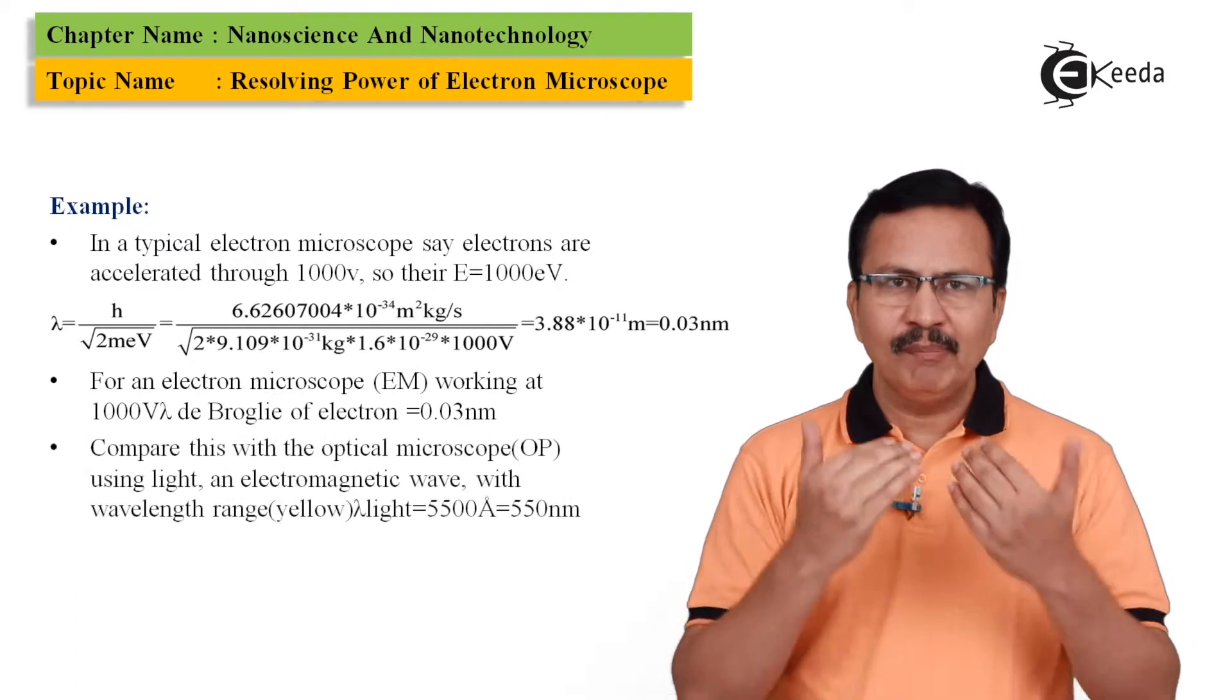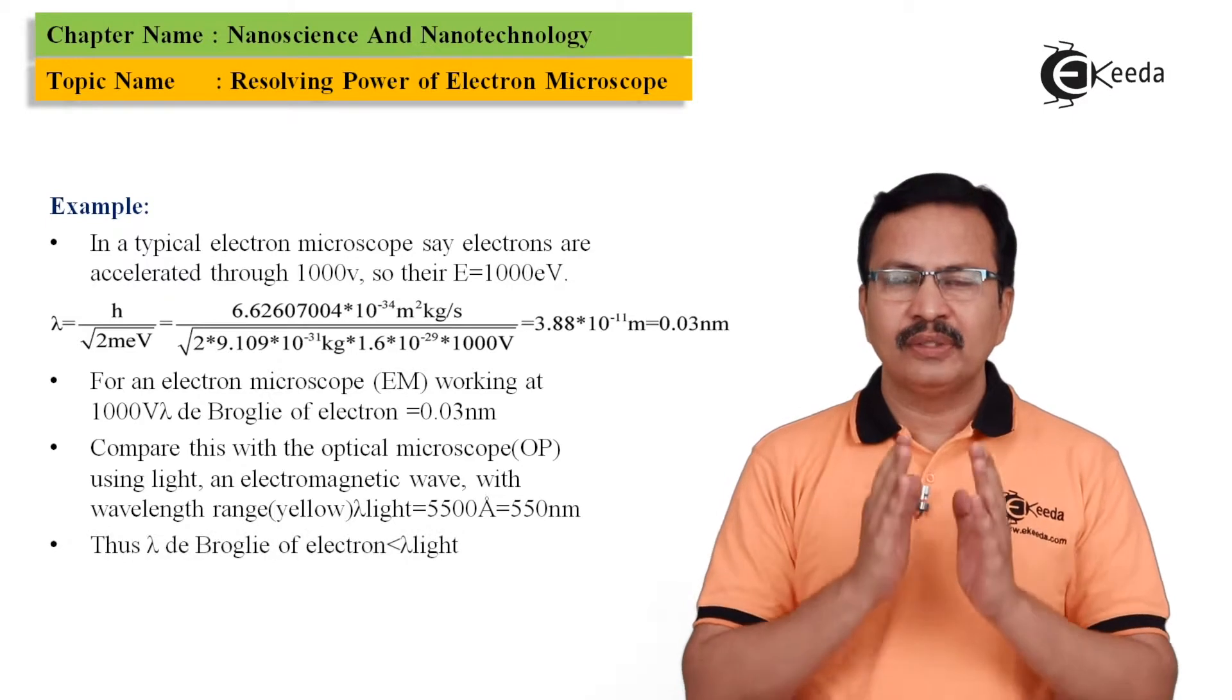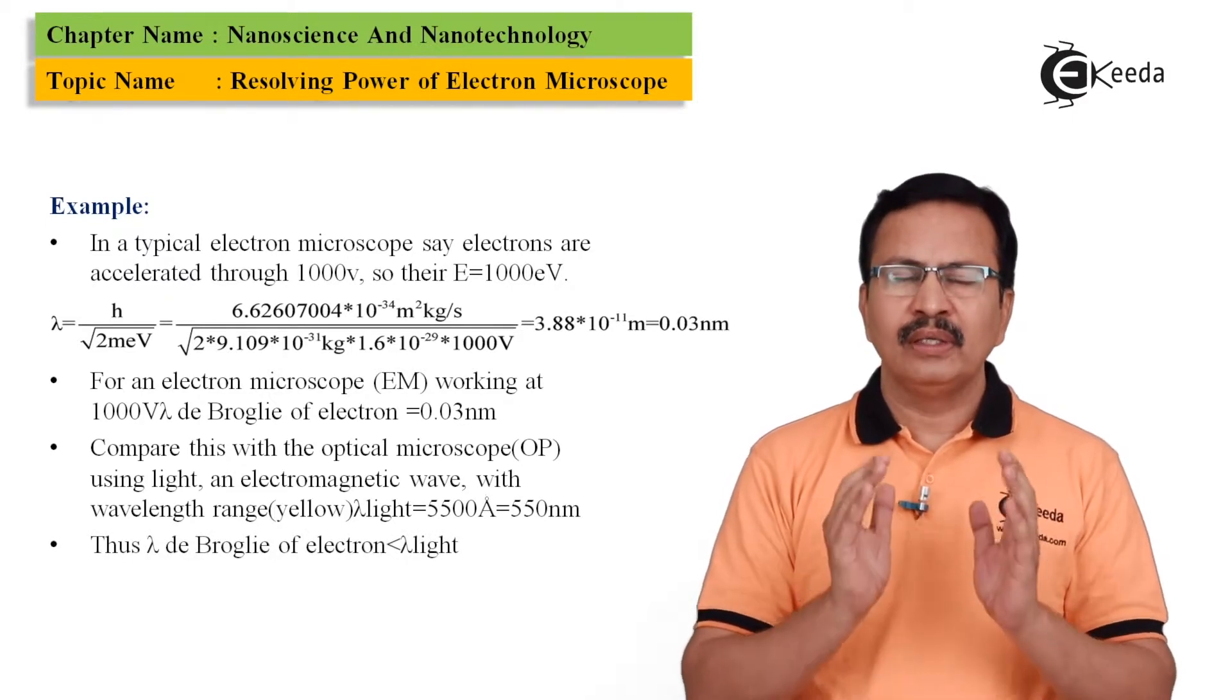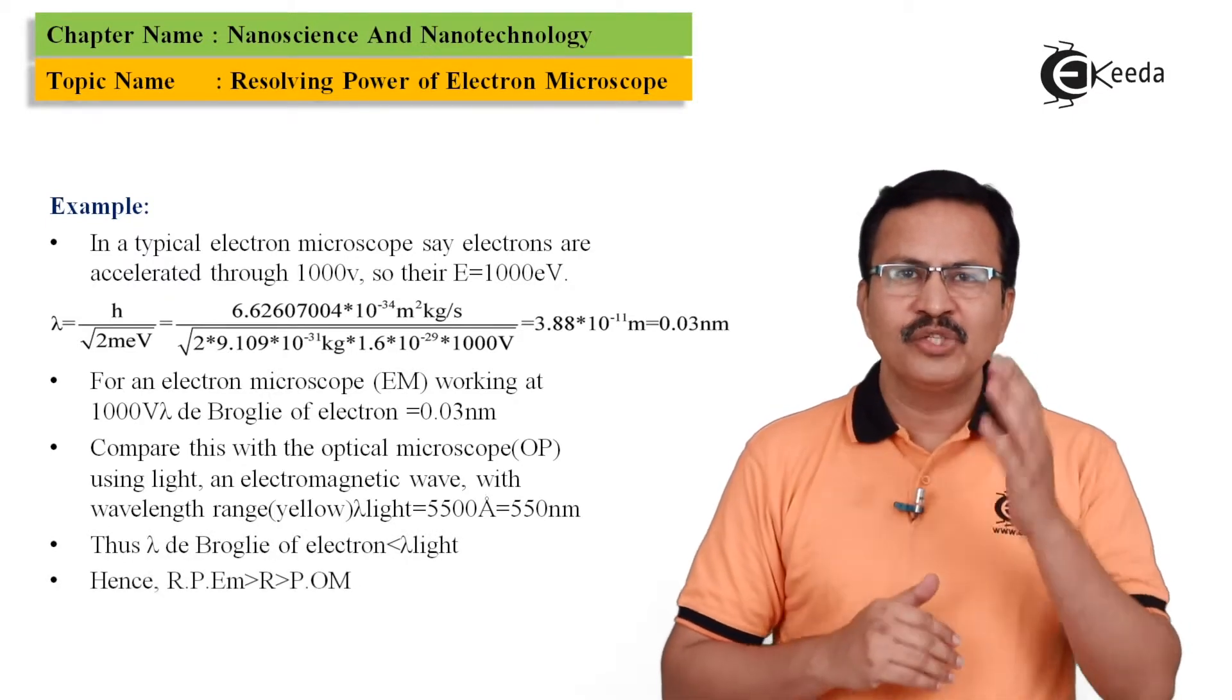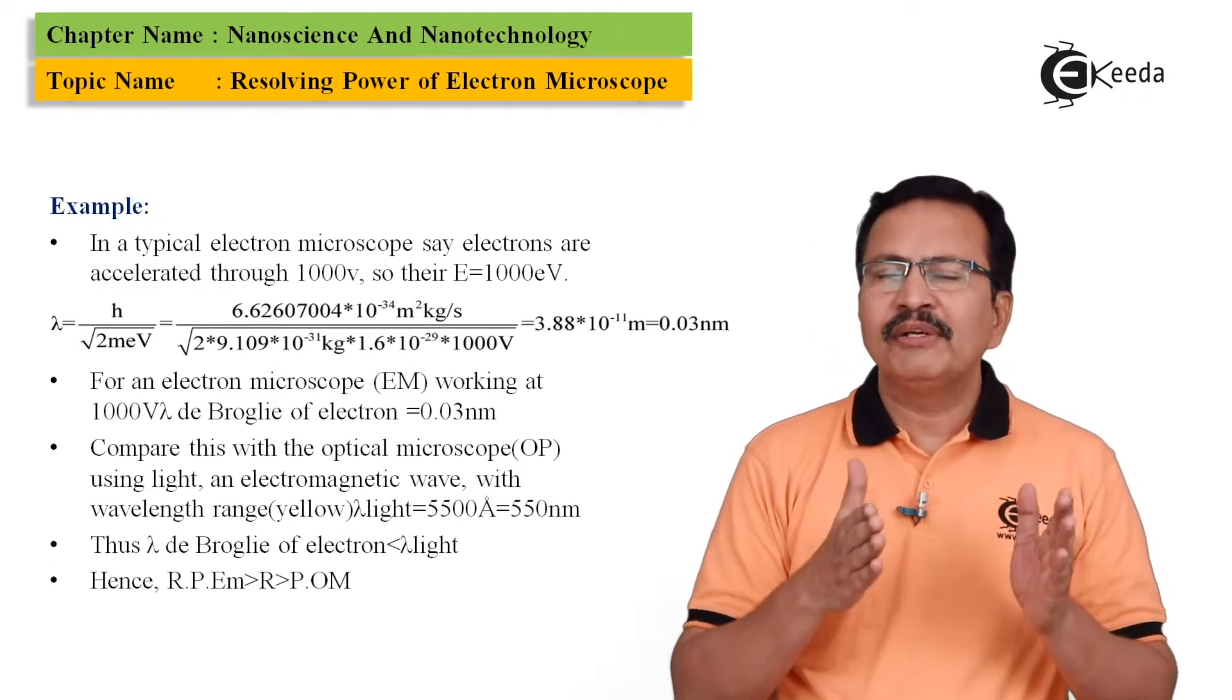So coming back to the question, how is it that I am going to increase the energy of an electron? And this is very simple. You simply accelerate it through an electric field.